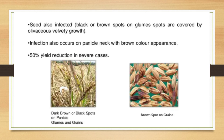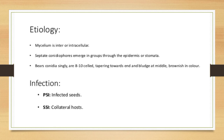Etiology: the mycelium is inter- or intracellular — intercellular means the mycelium grows between cells, and intracellular means growth within the cell. Mycelium is septate. Conidiophores emerge in groups through the epidermis or stomata, bearing conidia singly. Conidia are 8 to 10 cells, tapering towards the ends and bulging at the middle, brownish in color.